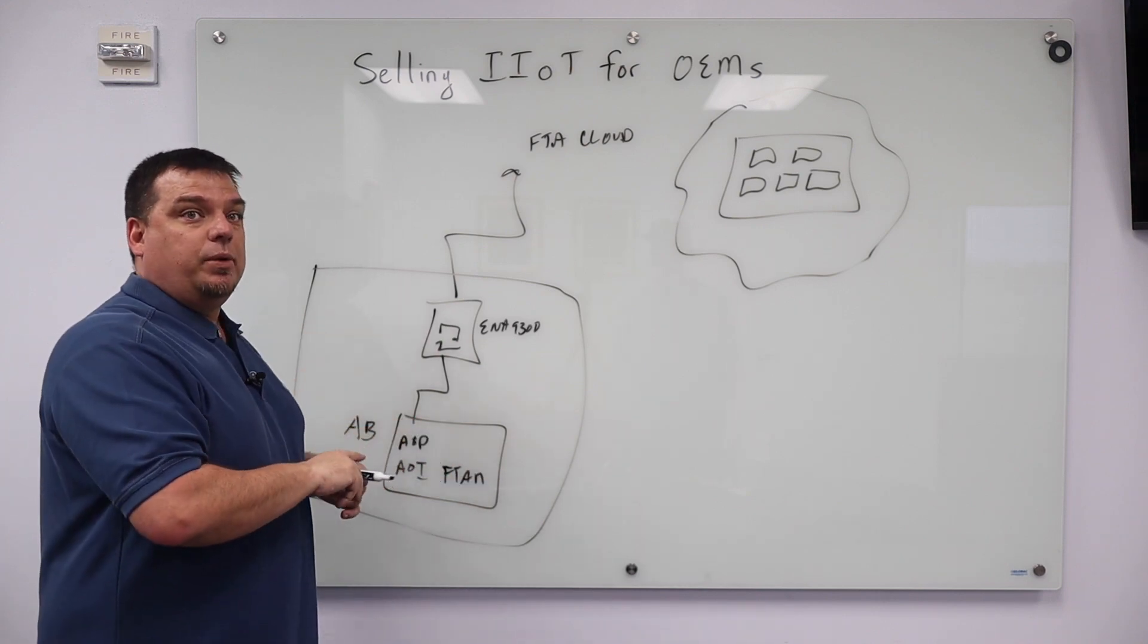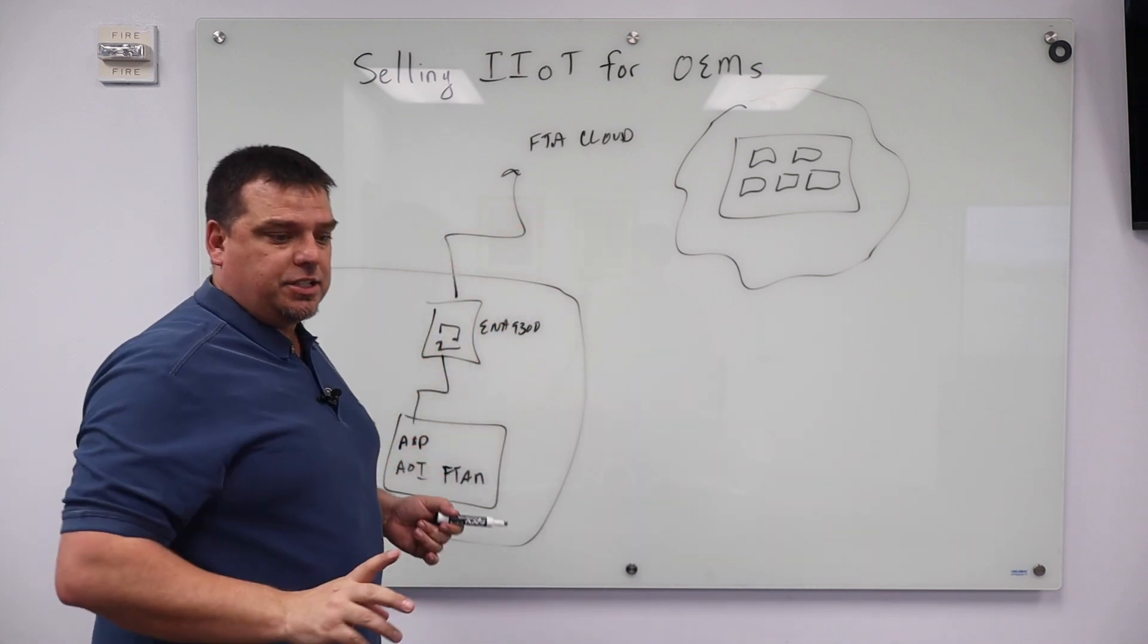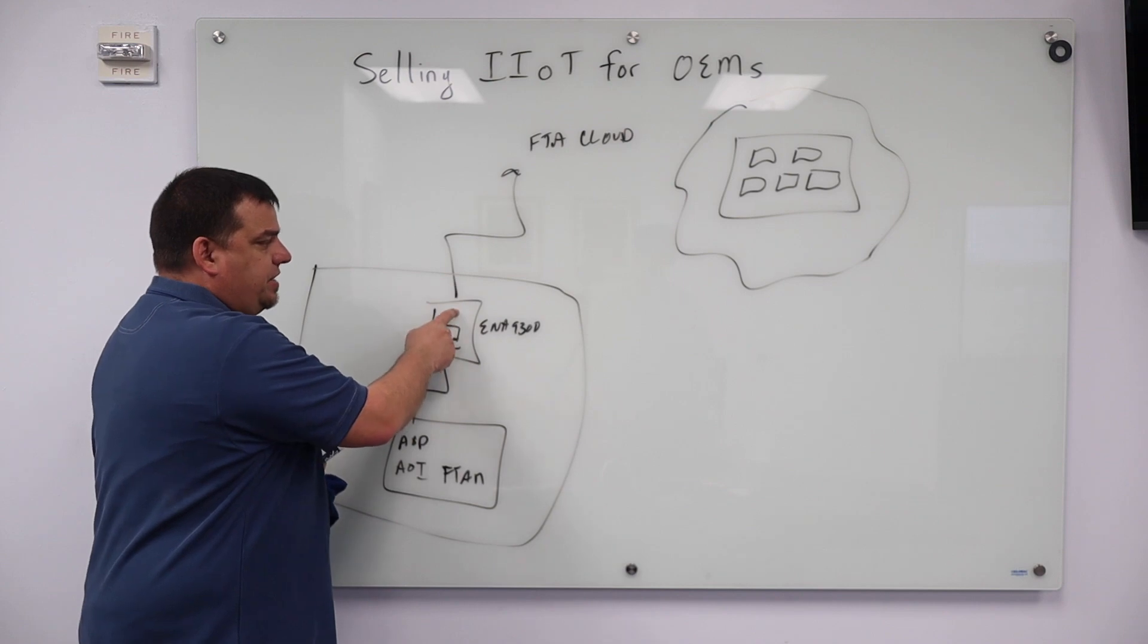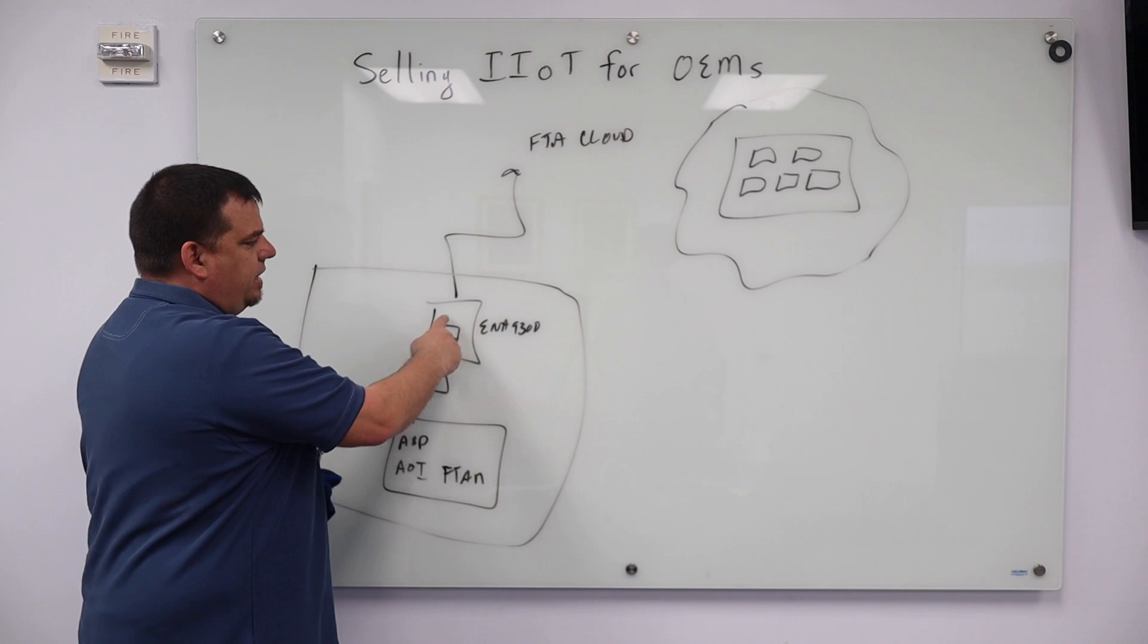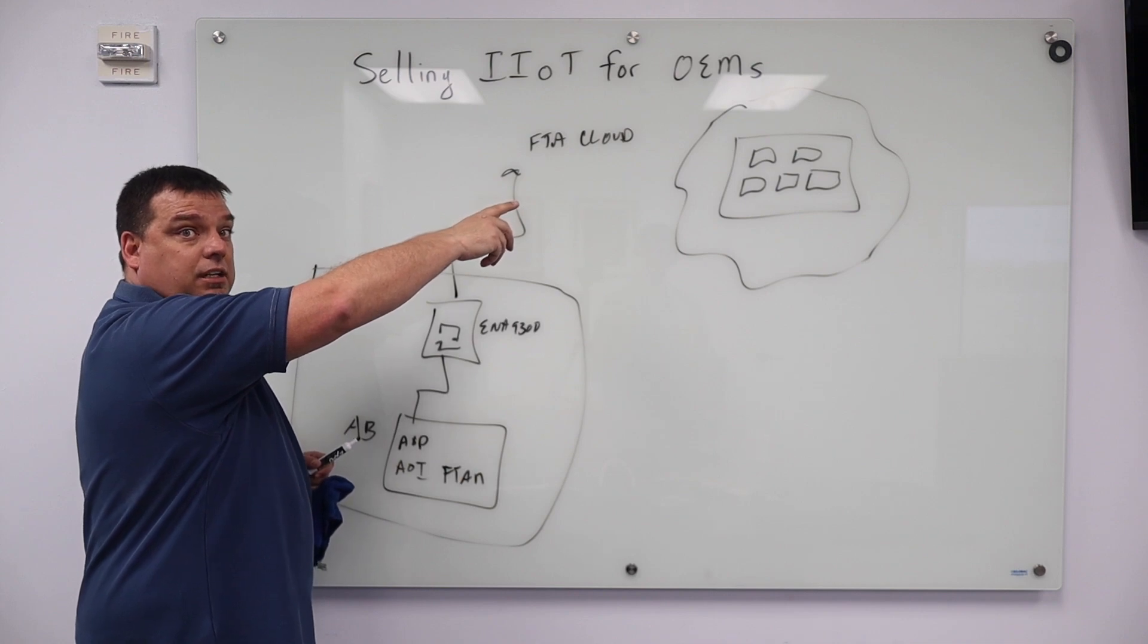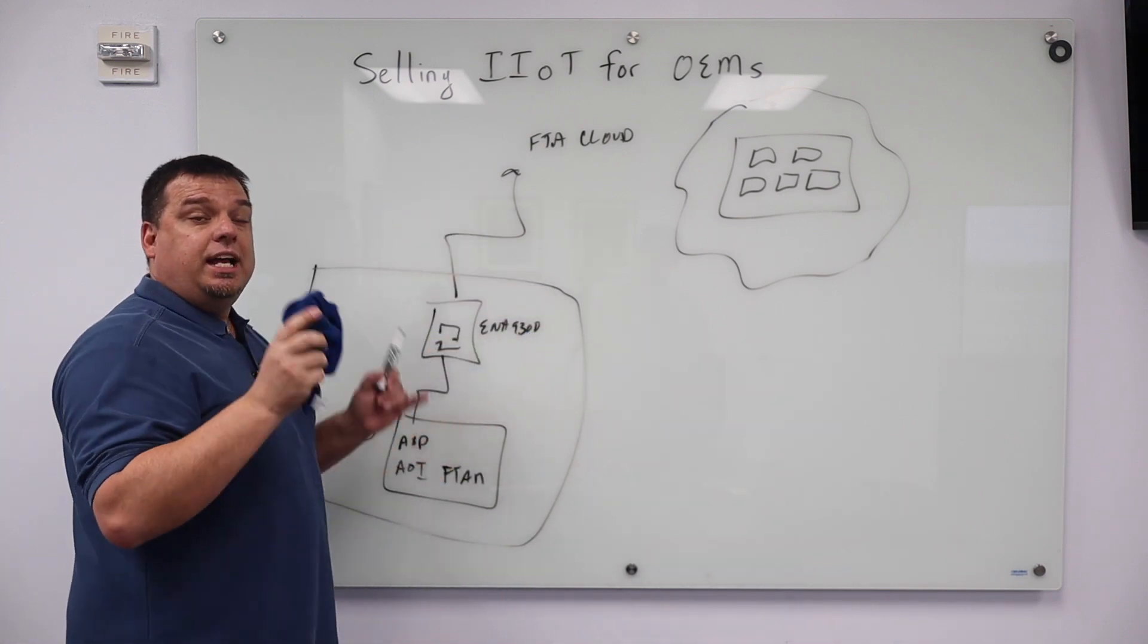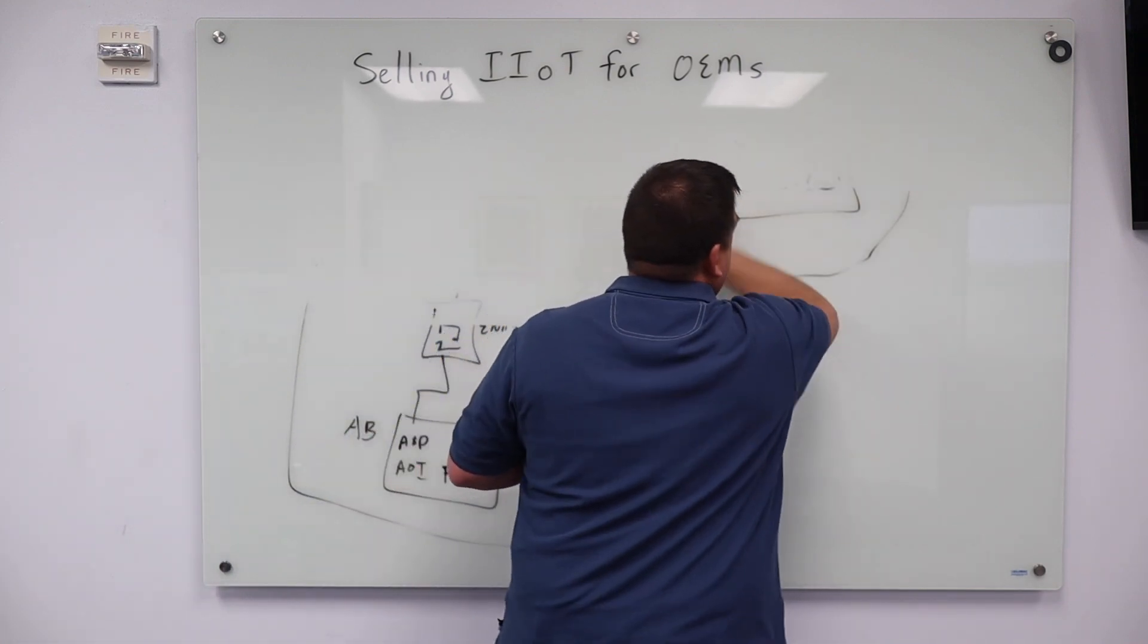So when we talk about the benefit for OEMs, I'm going to expand on the vision that Rockwell Automation had for Factory Talk Analytics for Machines, which was really meant for OEMs. Go ahead and ship your equipment with these FTAM profiles inside your PLC code, with this ENA 9300, ship it this way, get a Factory Talk cloud subscription, and now you can monitor all your machines you have installed all over the world where you're supporting your customers. I want to take it one step further as a value proposition for the OEMs. I want to take this concept and take it one step further.